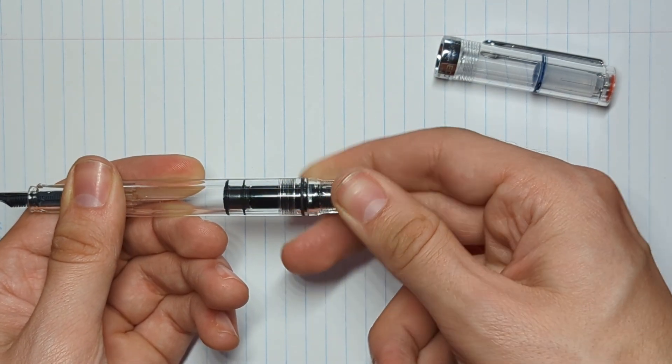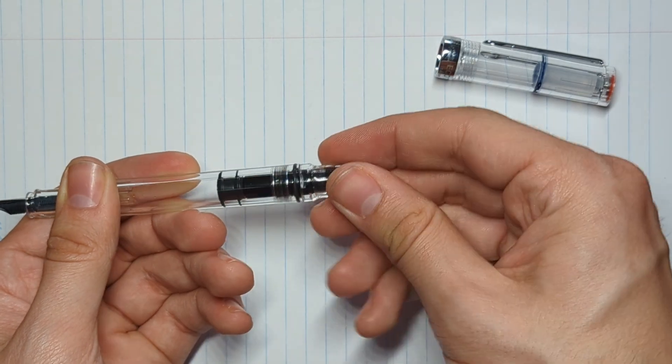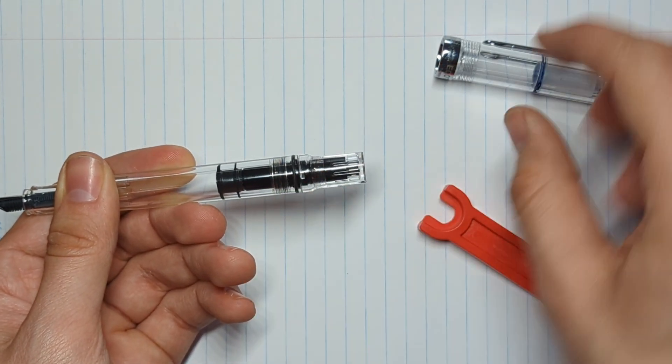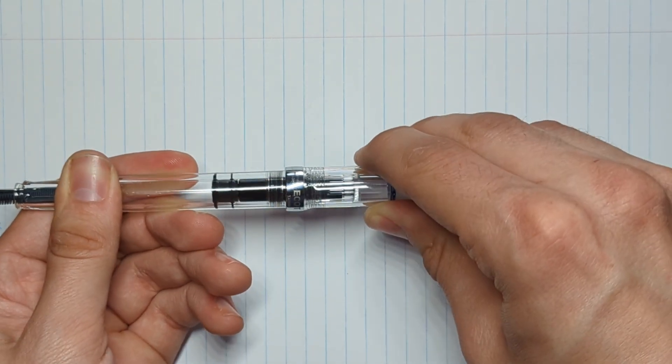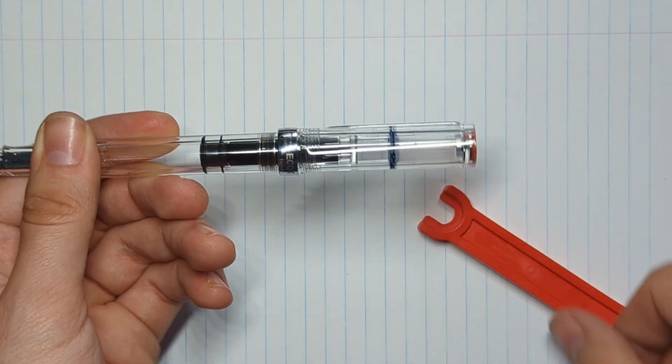As you can see now, the plunger can be fully retracted and the tail cap gap is gone. At last, the cap stays on nicely.